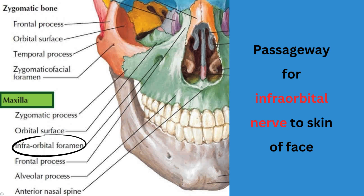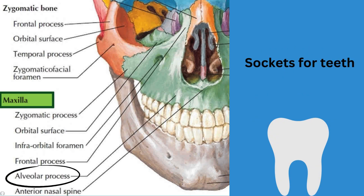Next is the infraorbital foramen, through which the infraorbital nerve exits. Next is the alveolar process — these are sockets that hold the teeth in place. In the maxilla, the alveolar process is located inferiorly because the teeth are positioned downward, whereas in the mandible it is located superiorly because the teeth are positioned upward.